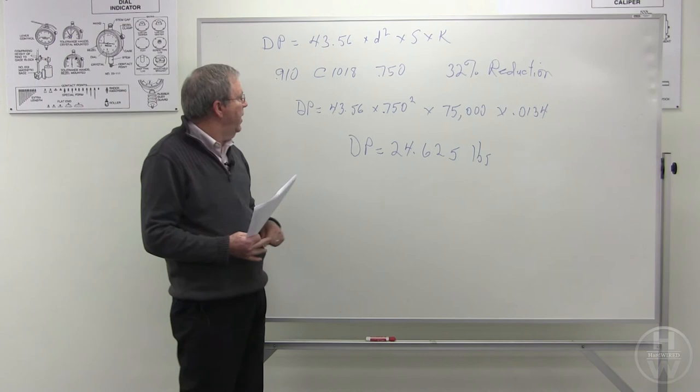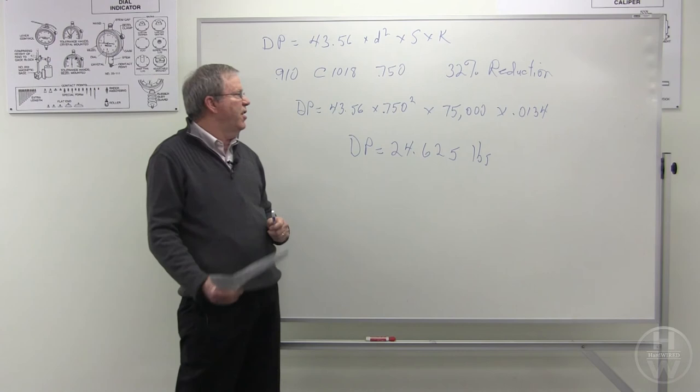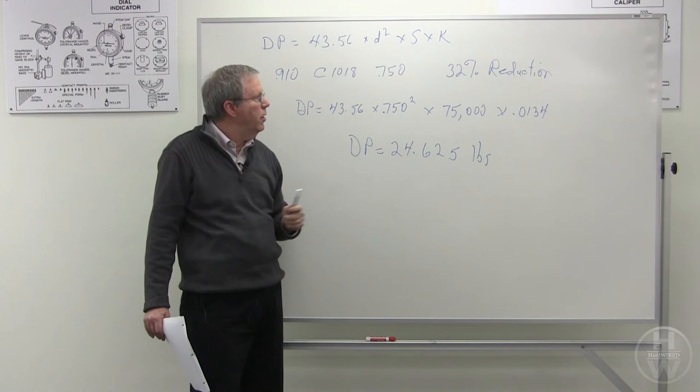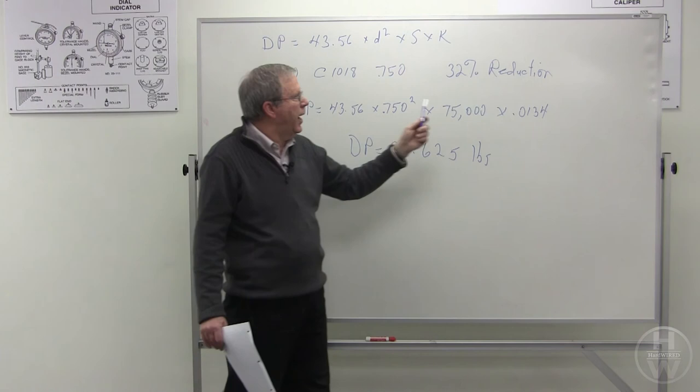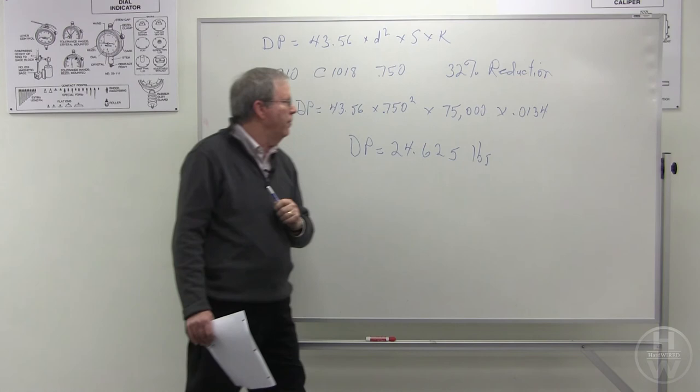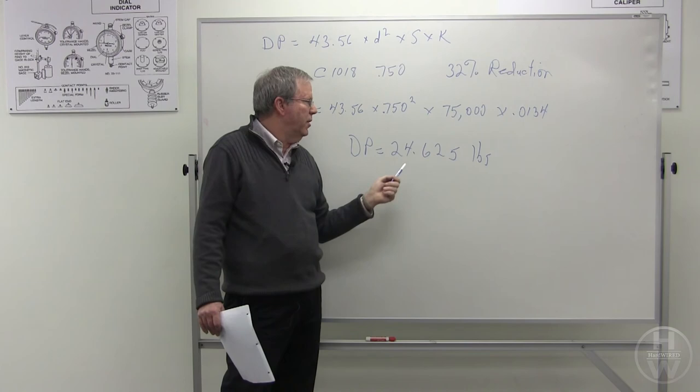So we now can fill in the factors into our equation. 43.56 times 750, the diameter of the finished wire, squared, times 75,000 PSI, times the factor which we got off the chart of 0.0134.